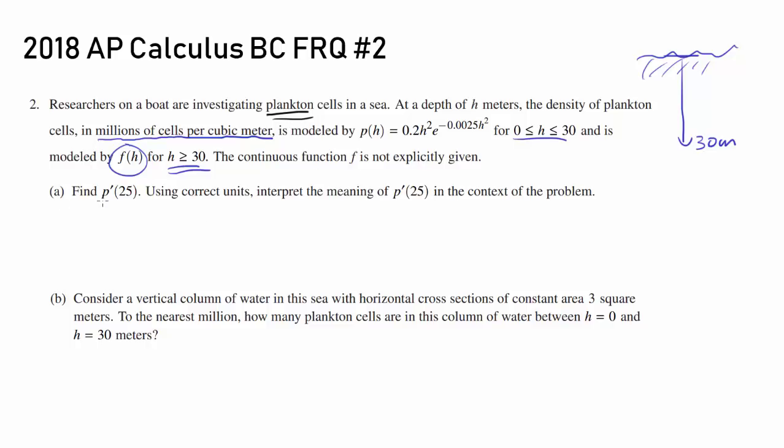Let's read on. Part A: find P'(25). Well, we have P(H), and this is free response number two, so you are allowed to use your calculator. Just plug it into your calculator, and you should get P'(25) ≈ -1.179. Make sure you round to thousands or more.